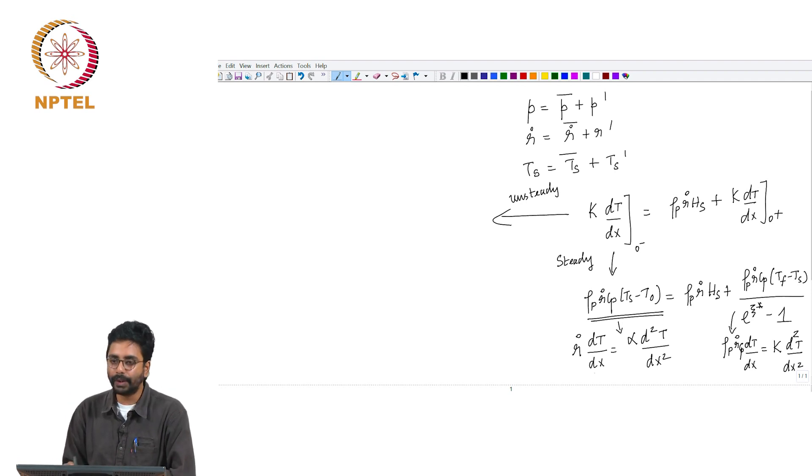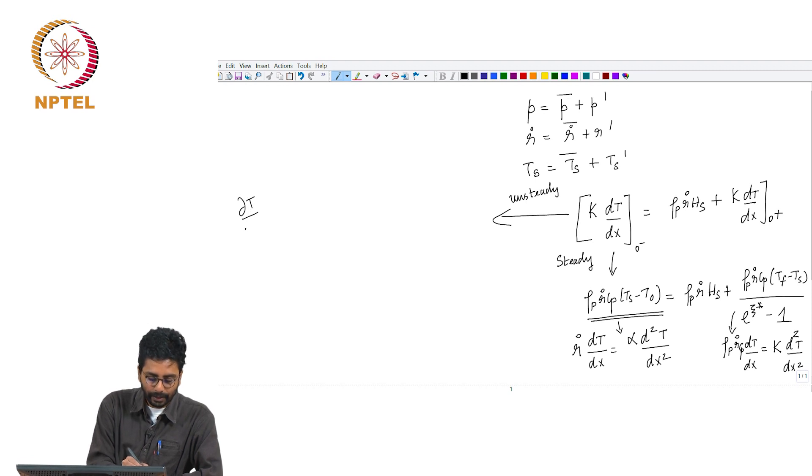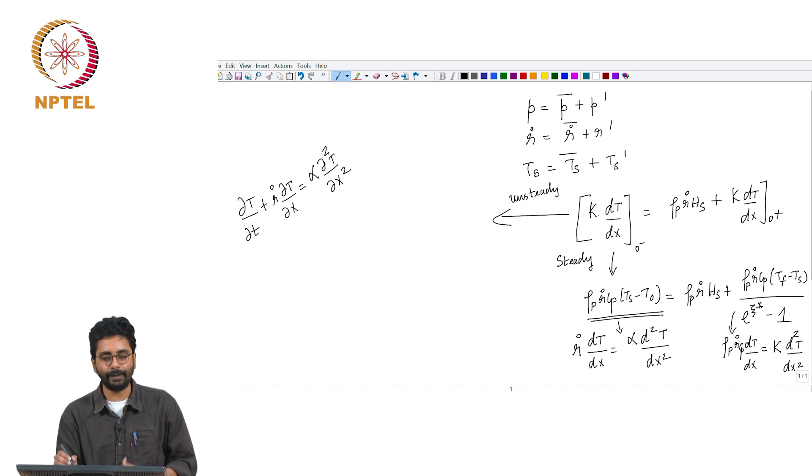The slope must be obtained from solving the unsteady conduction equation. This flux term, the heat flux that goes into the solid phase, must be calculated as a function of time because the surface temperature will now fluctuate with time. Why is the surface temperature fluctuating with time? Because the propellant itself is subjected to the fluctuation in pressure.